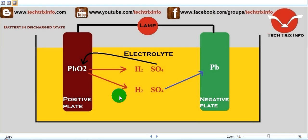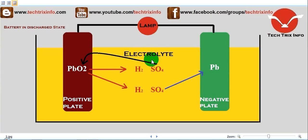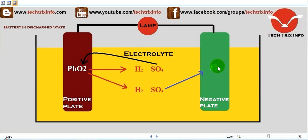Let's see what's happening chemically inside a lead acid battery while the battery is getting discharged. The electrolyte is H2SO4, which breaks down, and the sulfate (SO4) joins with the lead in the anode — the positive plate — and becomes PbSO4, that is lead sulfate. Another sulfate atom also joins with the spongy lead in the cathode and becomes lead sulfate as well.